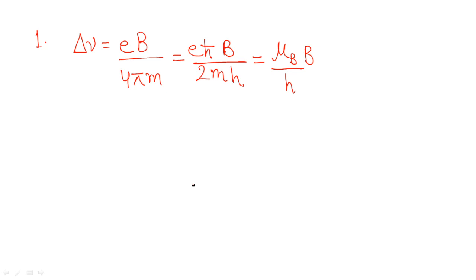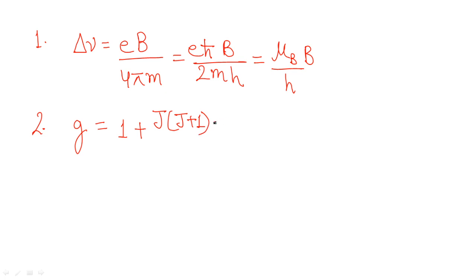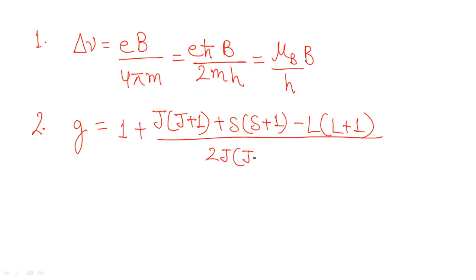The next formula is the Landé g-factor, which is another very important expression from atomic and molecular physics. If you can recall it, start writing. Be careful about the signs of different terms. The formula is: g equals 1 plus J(J+1) plus S(S+1) minus L(L+1), all divided by 2J(J+1).